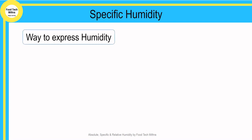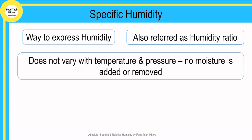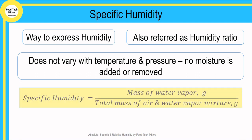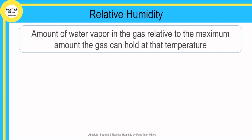Specific humidity is another way to express humidity and is also referred to as humidity ratio. Specific humidity is given as the ratio of the mass of water vapor to the total mass of the air and water vapor mixture. It does not vary with pressure or temperature as long as moisture is not added or removed from it.